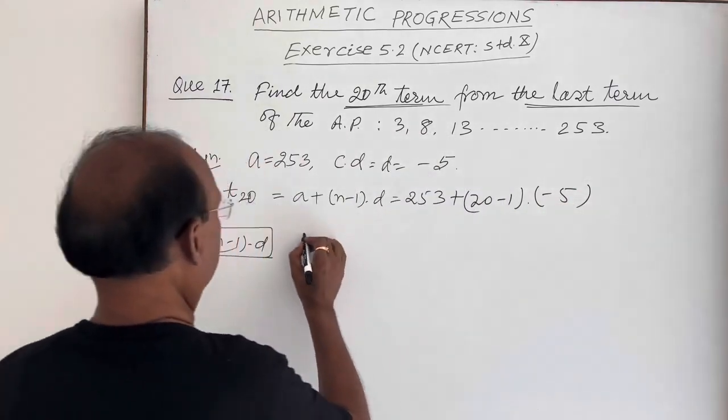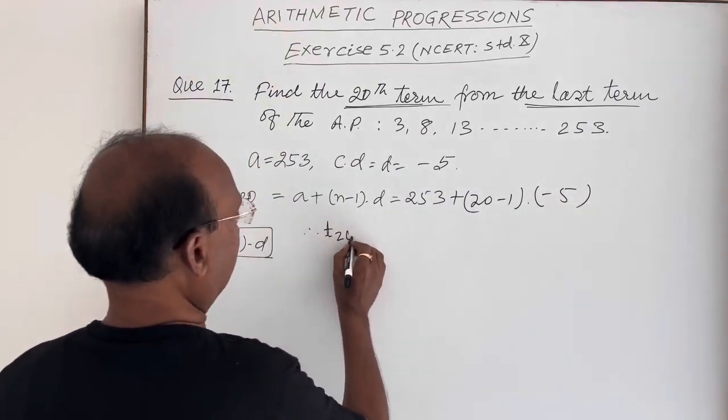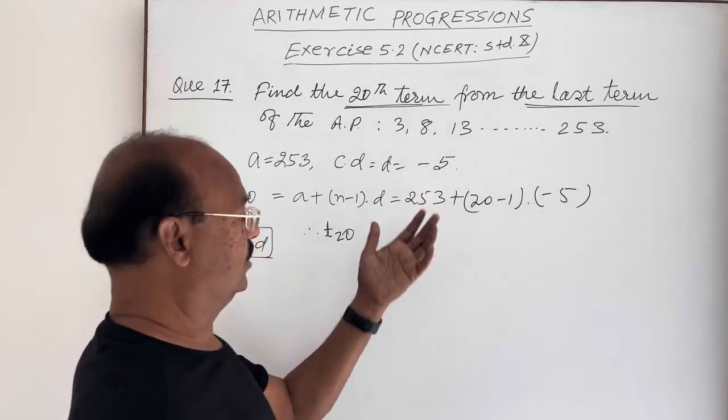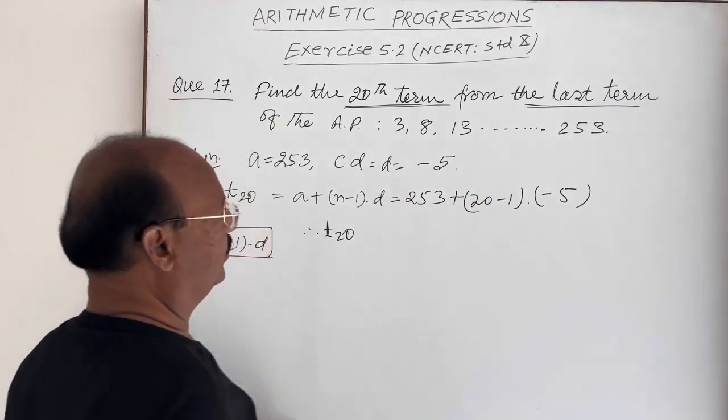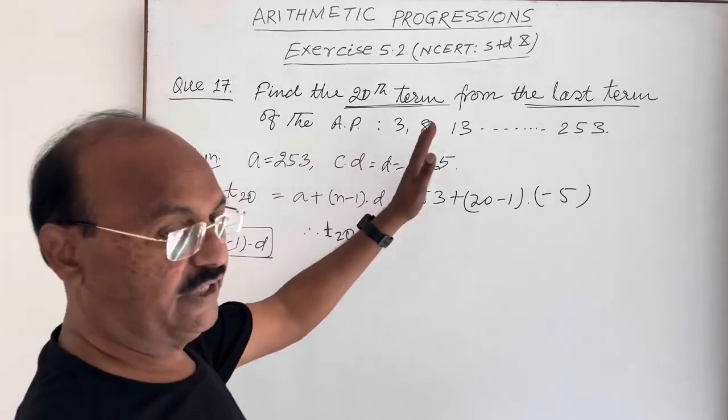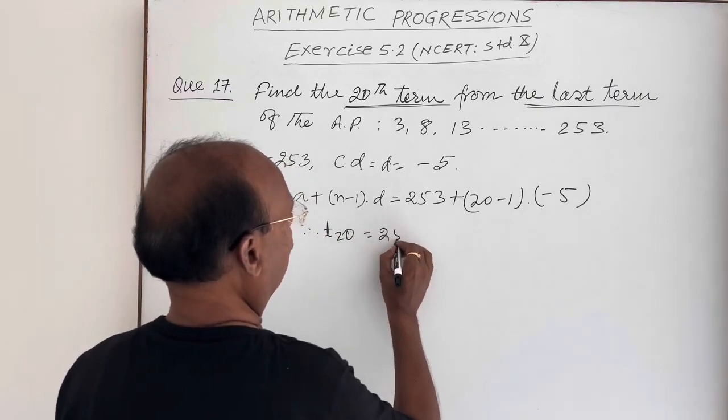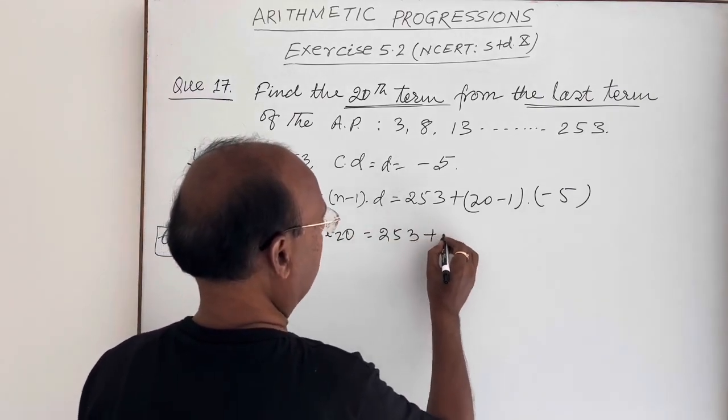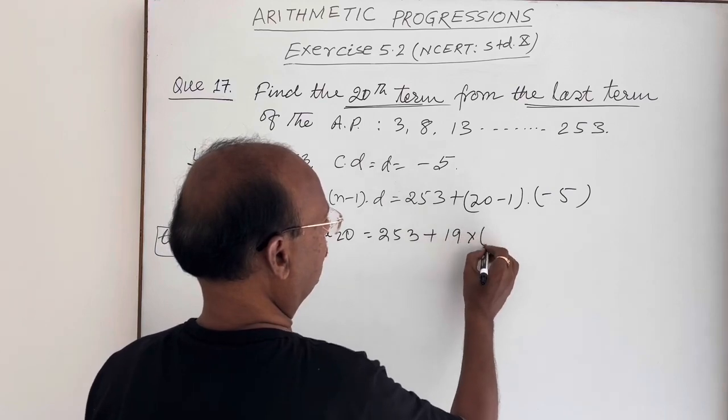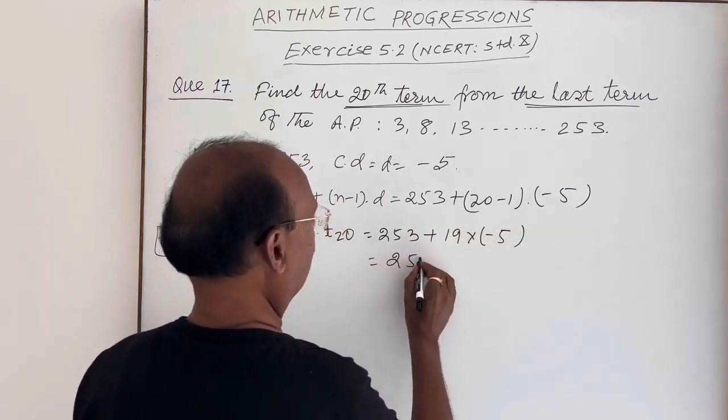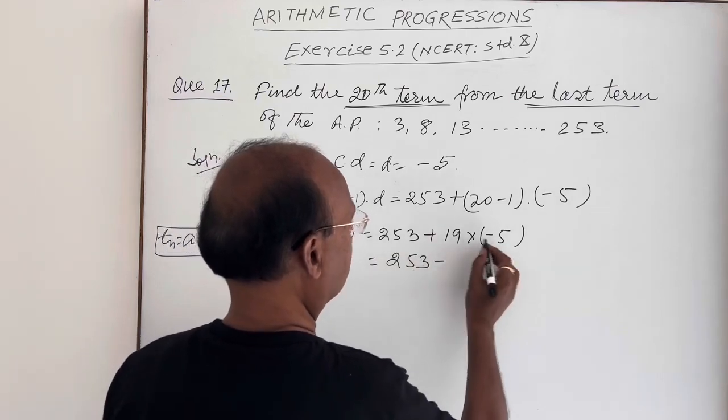Therefore T20, the 20th term from the last, is equal to 253 plus 19 times minus 5, which equals 253 minus 95.